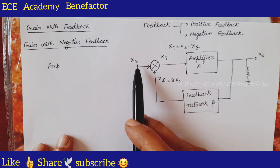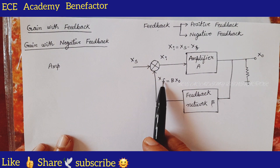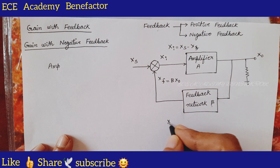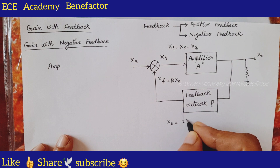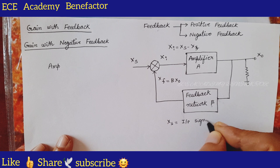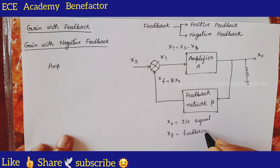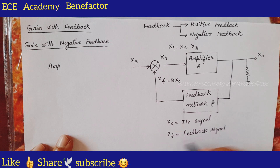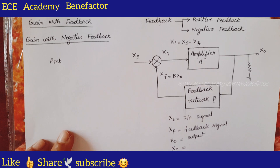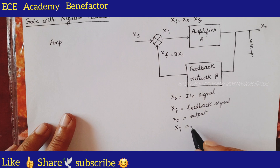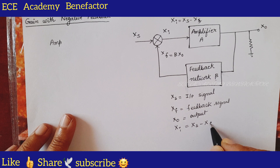Part of output means beta times of the output value is x_f. X_i is the difference between the incoming input signal and the feedback signal. X_f is the feedback signal, x_naught is the output, and x_i is the difference signal which is equal to x_s minus x_f.